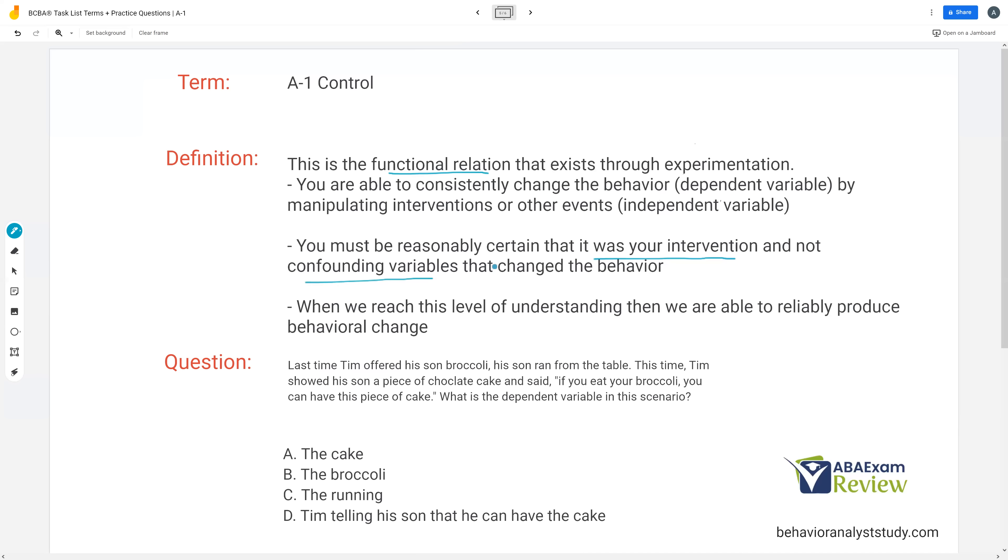Now, you can be reasonably sure, based on your data, that your intervention is the reason that behavior is changing. But you're never going to be 100% sure. So you can say there's a functional relation that exists through your manipulation. And if you're able to reach that level of understanding, you have control and you can reliably produce behavioral change.